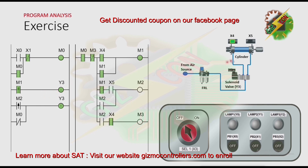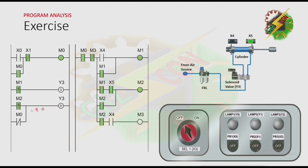Because y3 is on, the cylinder will extend. The cylinder reaches the fully extended position. Because m1 is on and x5 is on, m2 will turn on, and the strut rise of m2 will turn on, sending a signal to the reset coil. Because of that, y3 will turn off. The signal here is not continuous. And because y3 is off, the cylinder will retract.